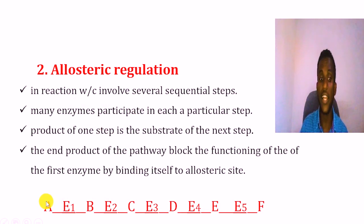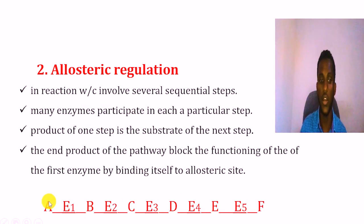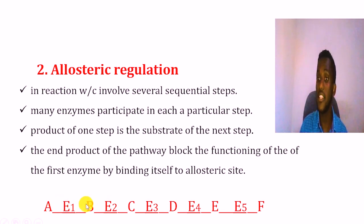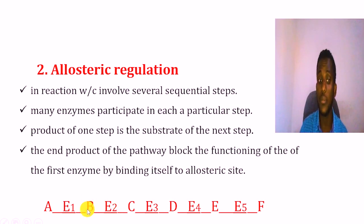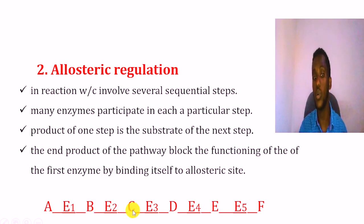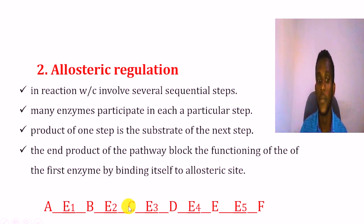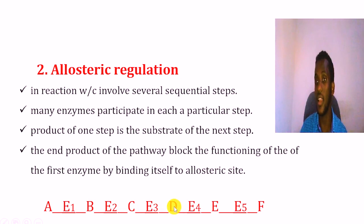This is the example: A is the substrate, and B is the product formed. Enzyme 1 converts A to B. Enzyme 2 converts B to product C. C becomes the substrate for the next enzyme, which produces product D. Enzyme 4 converts D, and so on through the pathway.